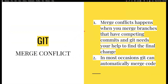A merge conflict happens when you try to merge code between two branches that have competing commits — meaning two developers at the same time are trying to alter the same code. Git gets confused about which one to use, and this is what a conflict is. At this point, Git needs a developer's help to identify which piece of final code it has to take. Resolving the merge conflict manually is normally a time-consuming task in real time.